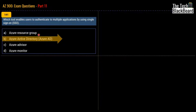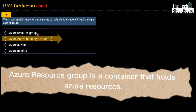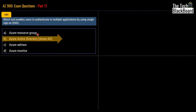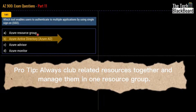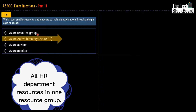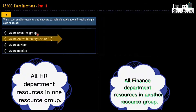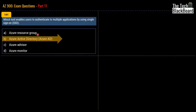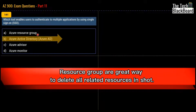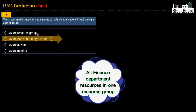Azure Resource Group is a container that holds related resources for an Azure solution. The resource group can include resources for your entire organizational solution, but the better way is to group related resources and manage them together inside a single resource group. For example, you can combine all resources related to the HR department in one resource group and all resources related to the finance department in another. Resource groups are also a better way to delete resources together — select the resource group and delete them all in one shot.